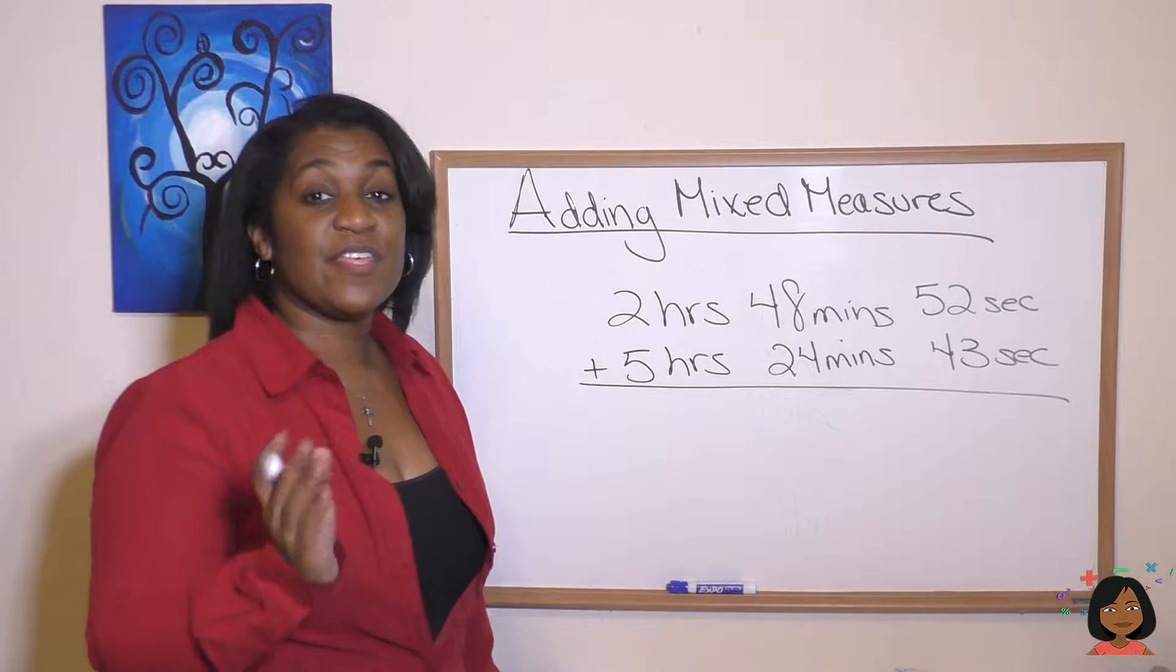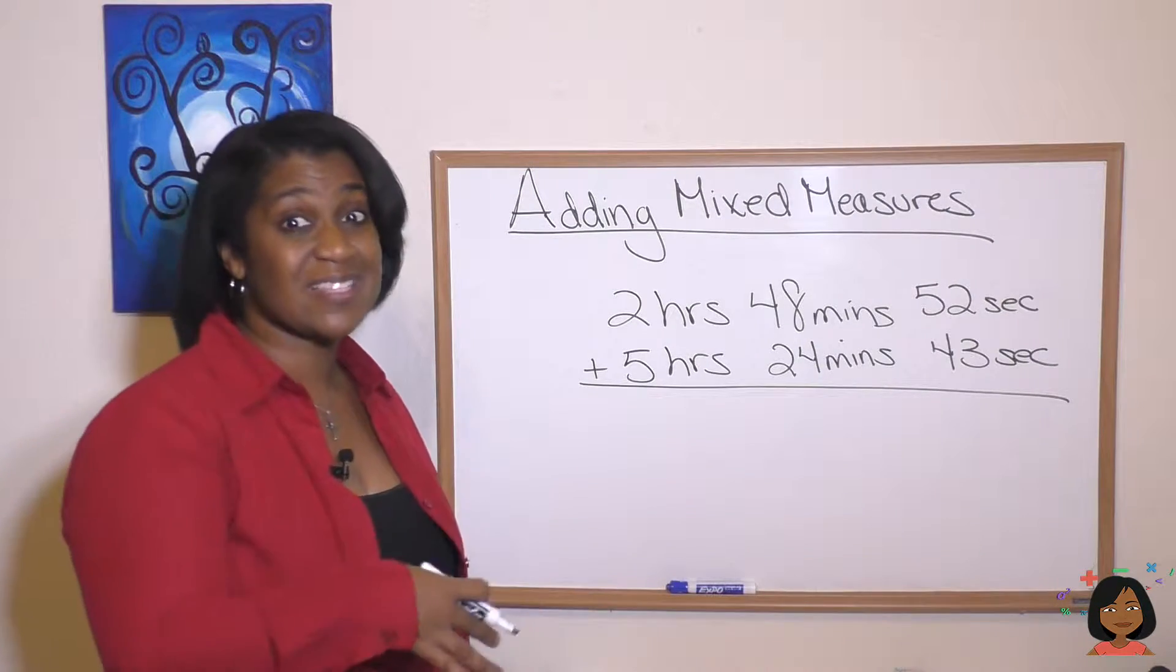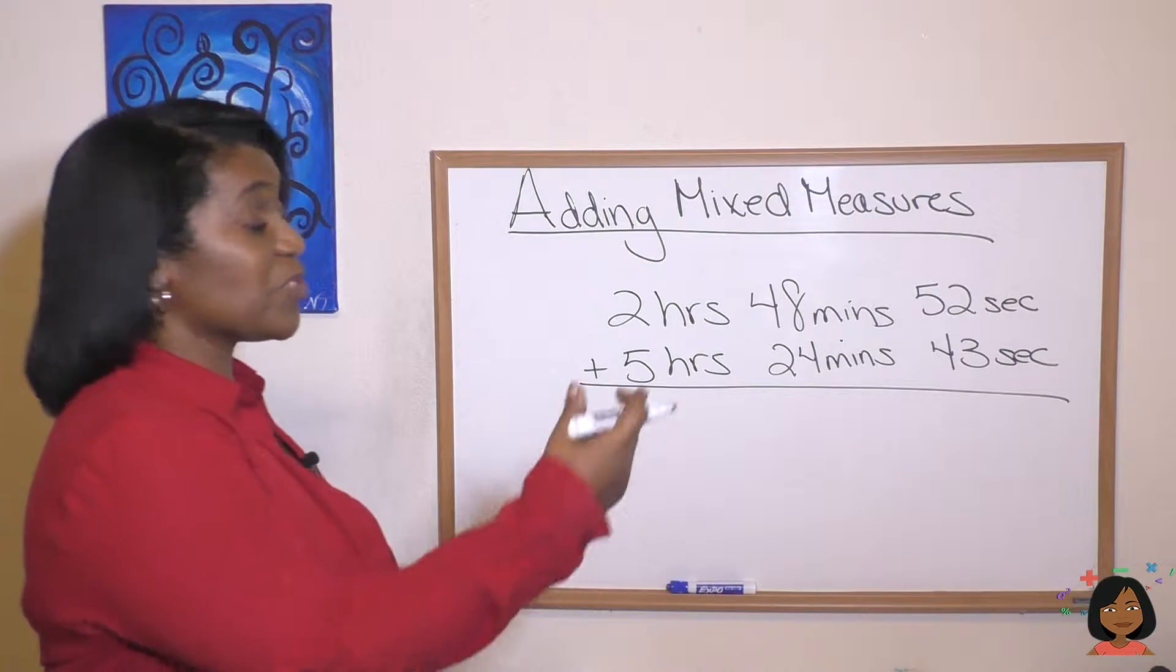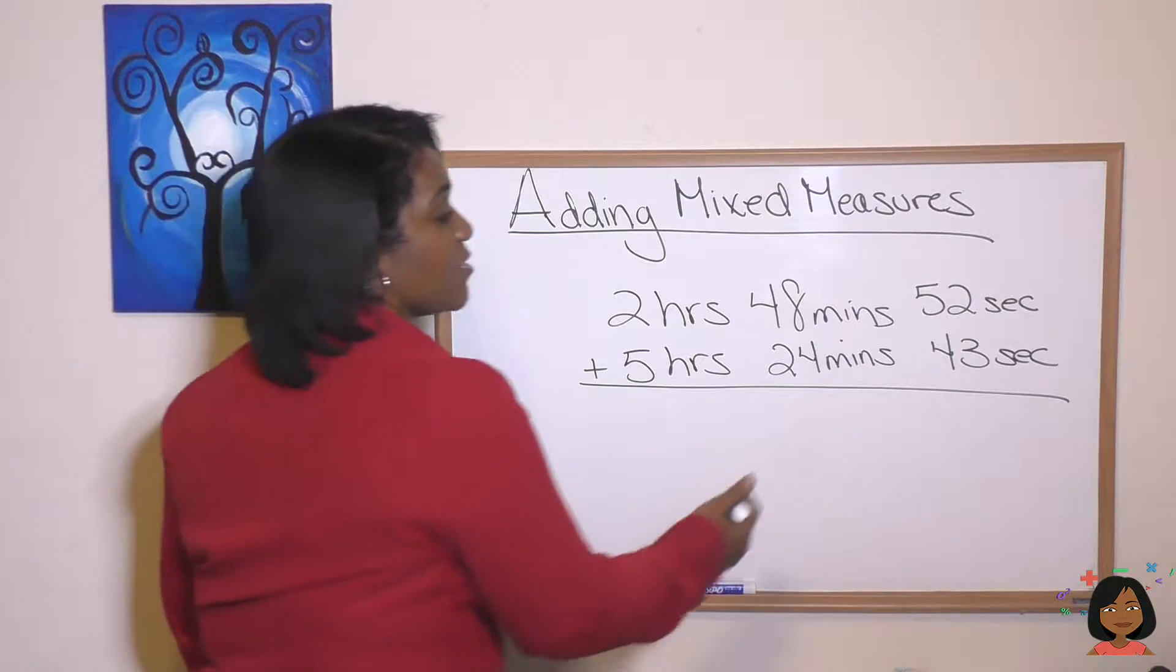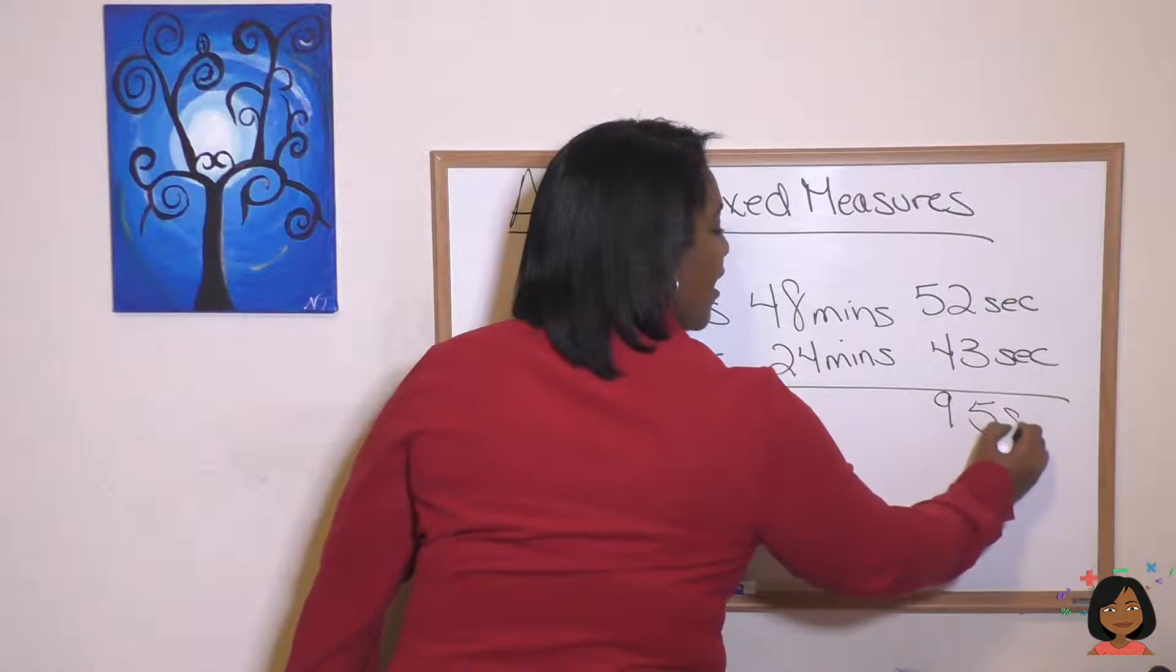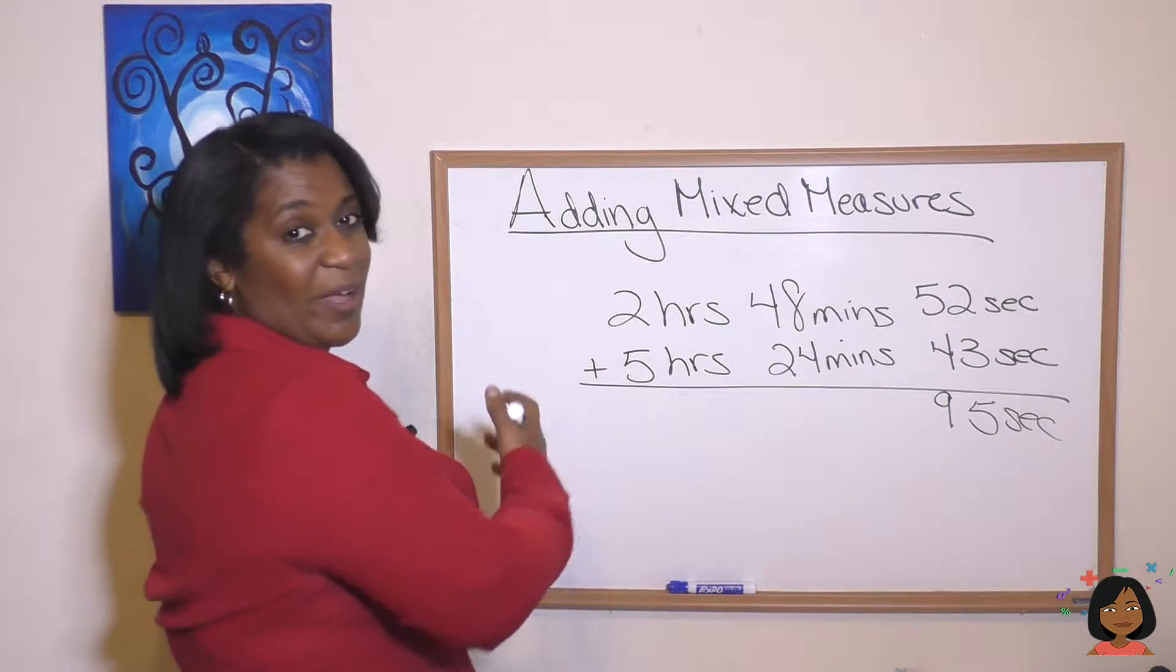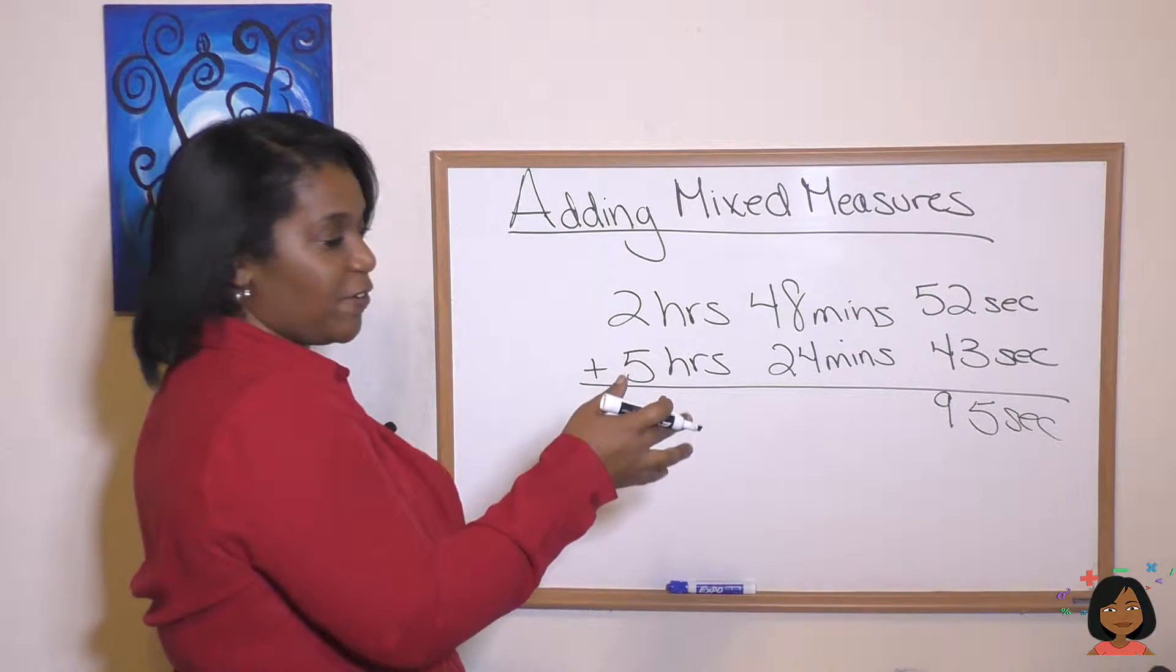Let's try another one. This time we're adding different measurements of time. So we're looking at hours, minutes, and seconds. Well, let's start with the smallest one first. Three and two is five. Five and four is 95 seconds. And we could do one of two things. We could go all the way across or we could stop here and do a conversion.